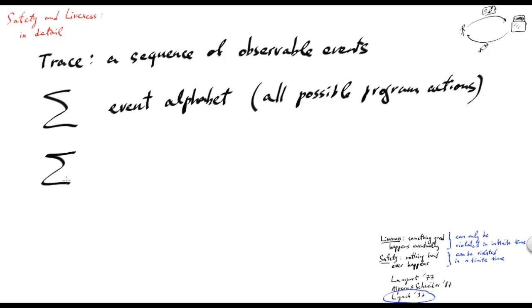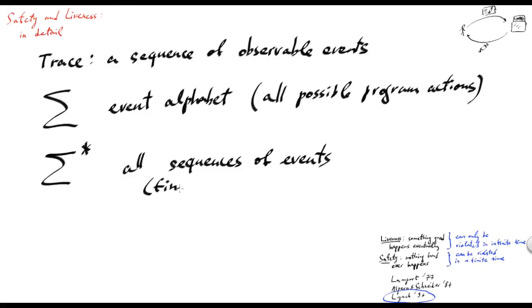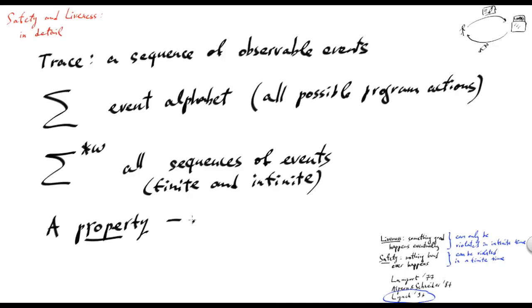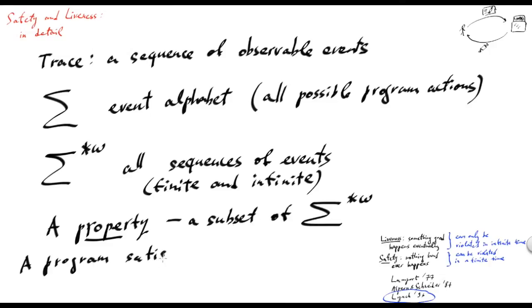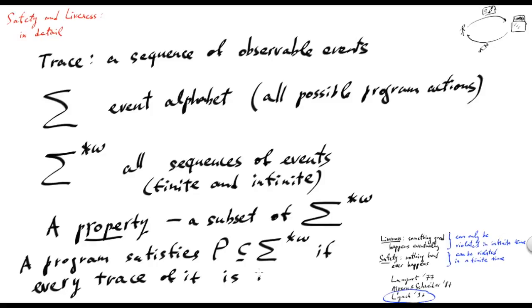Respectively, we denote by sigma-star all sequences of events. We also consider not only all finite sequences of events, but also infinite ones, and we denote by omega the set of infinite event sequences. Now, a property would be just a subset of the set of all possible sequences. We would say that a program satisfies a property P — which is, as I said, a set of traces — if every trace of it is in P.